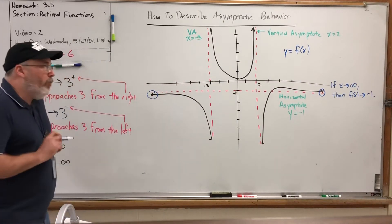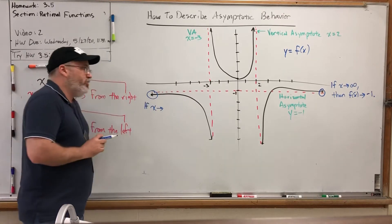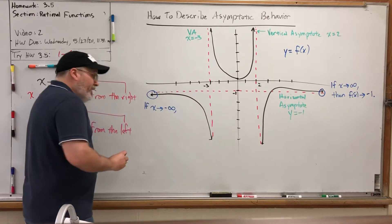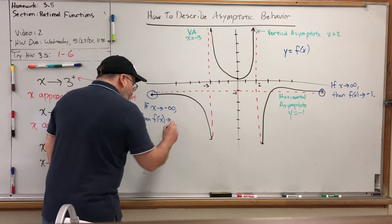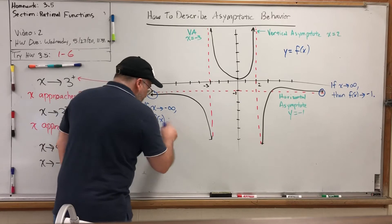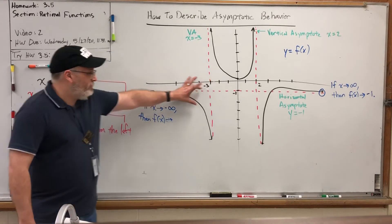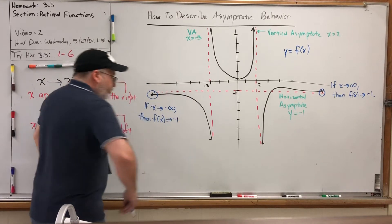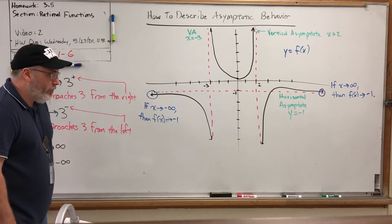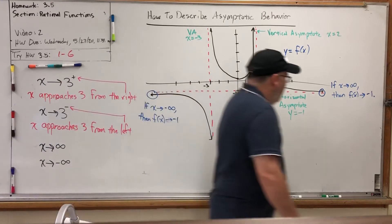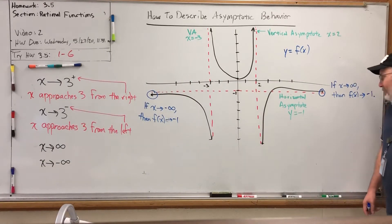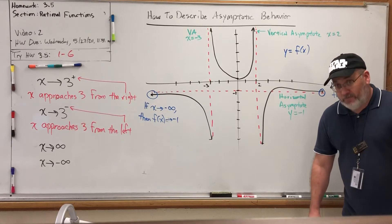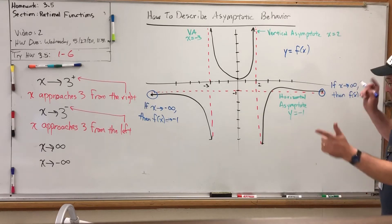What about the other end? X approaching forever to the left is negative infinity. So if X approaches negative infinity, then what is the function value approaching? The same horizontal asymptote dictates the same end behavior — the further out you go to the left, the closer the graph gets to y equals negative 1. For a horizontal asymptote, you describe what happens as X approaches both negative infinity and positive infinity. For rational functions, the horizontal asymptote will be unique.